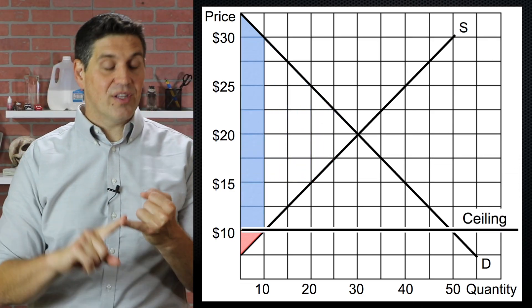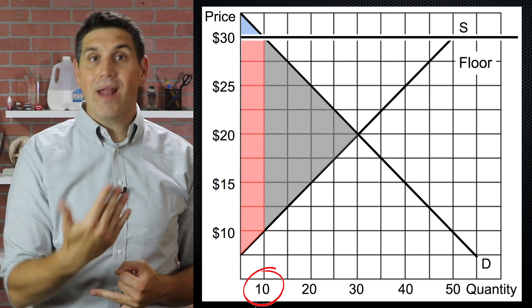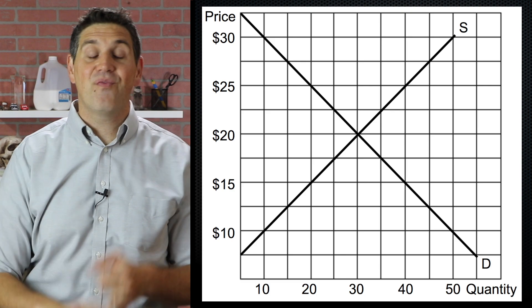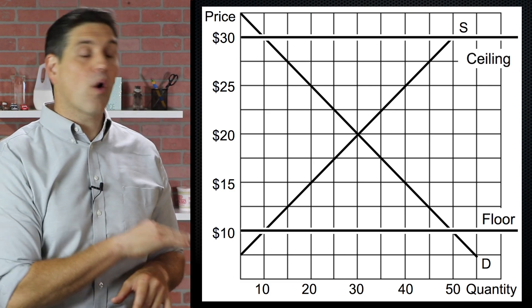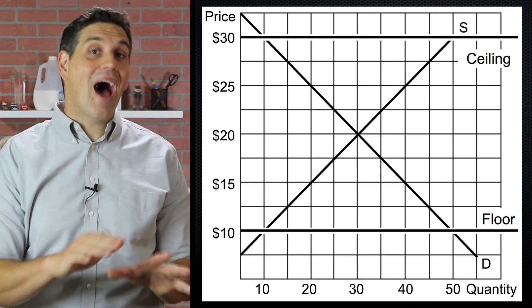Notice that in both cases, whether it's a ceiling or a floor, quantity is going to be less than the original equilibrium. We're going to end up with deadweight loss. Now, one of the things you're going to have to watch out for here, because teachers and professors love it, is putting a price ceiling above equilibrium or a floor below equilibrium. In those cases, the floor and the ceiling are not binding.